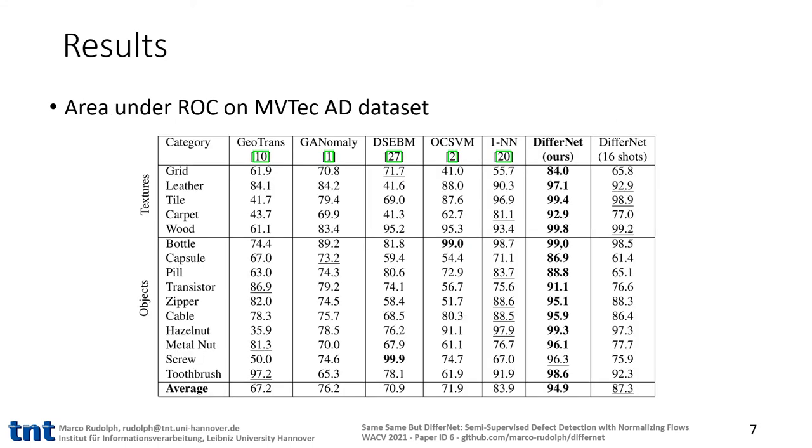Let's take a look at the experimental results. We varied this mentioned threshold to calculate the area under the ROC curve for detecting defects from the MVTec AD dataset. As can be seen, we set new state-of-the-art results for almost every class. Surprisingly, even the training on 16 out of 100 samples per class outperforms competitors.